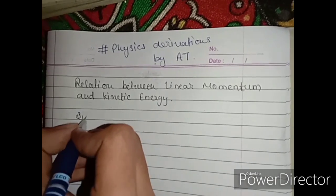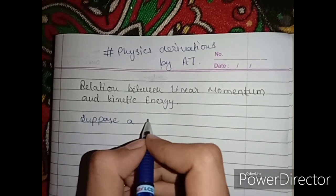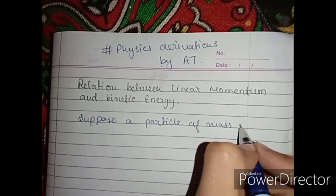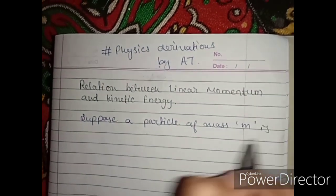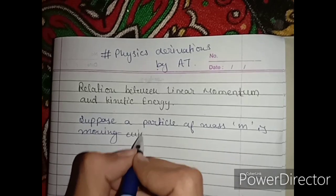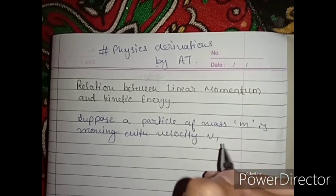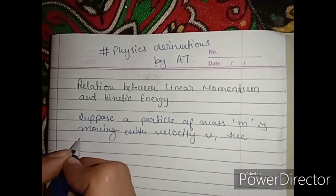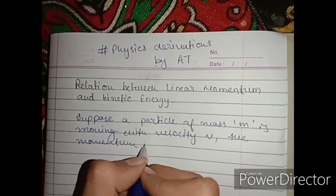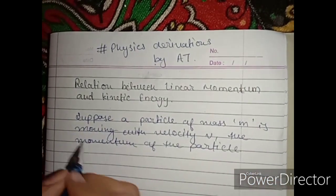So suppose a particle of mass m is moving with velocity v. The momentum of the particle will be mv.